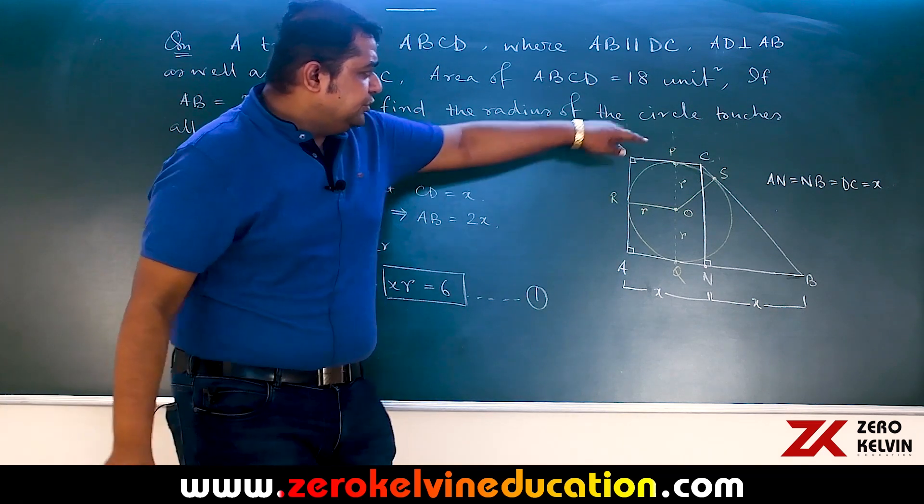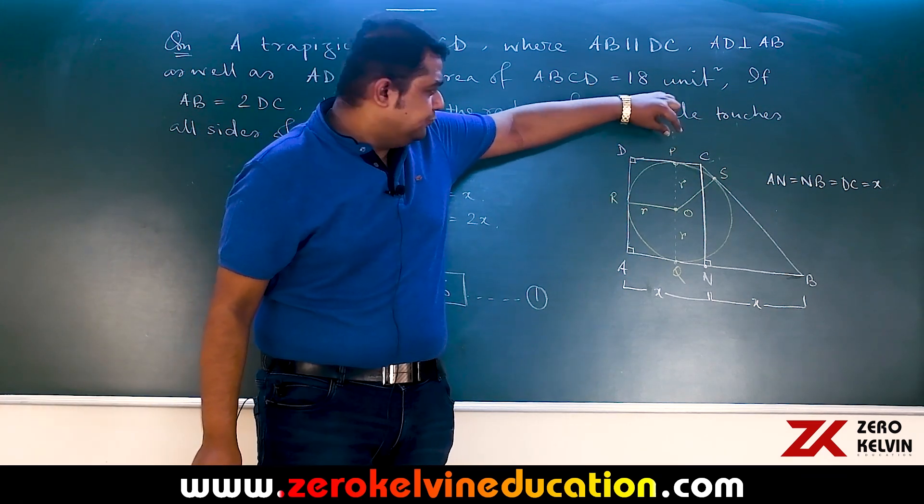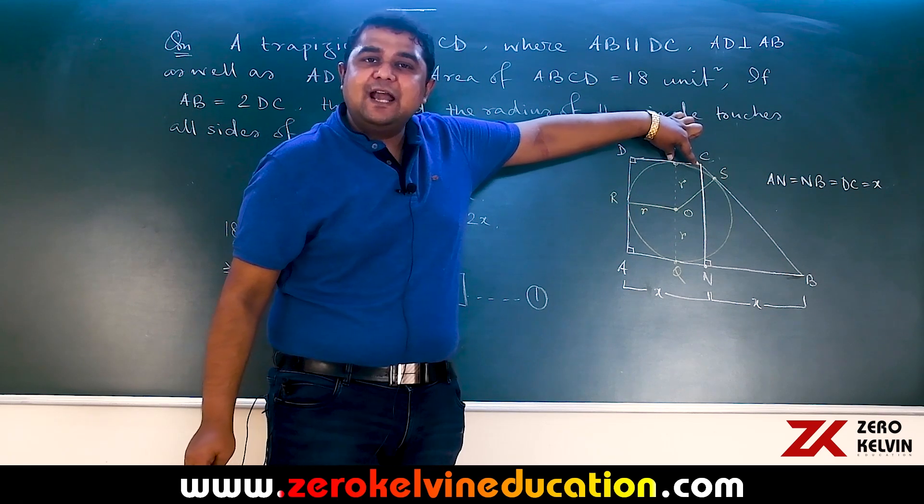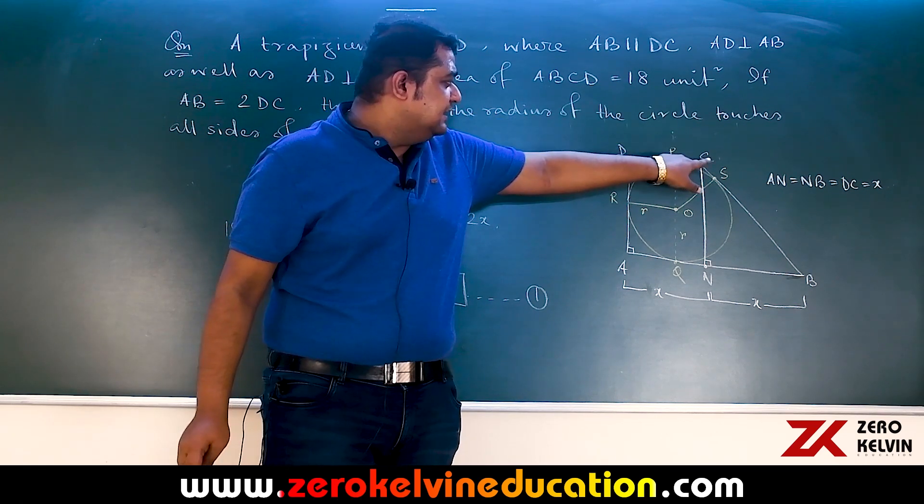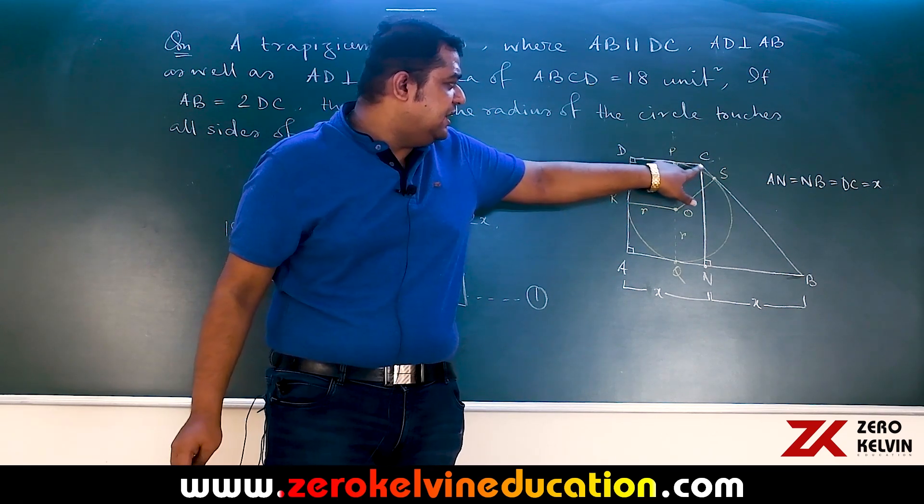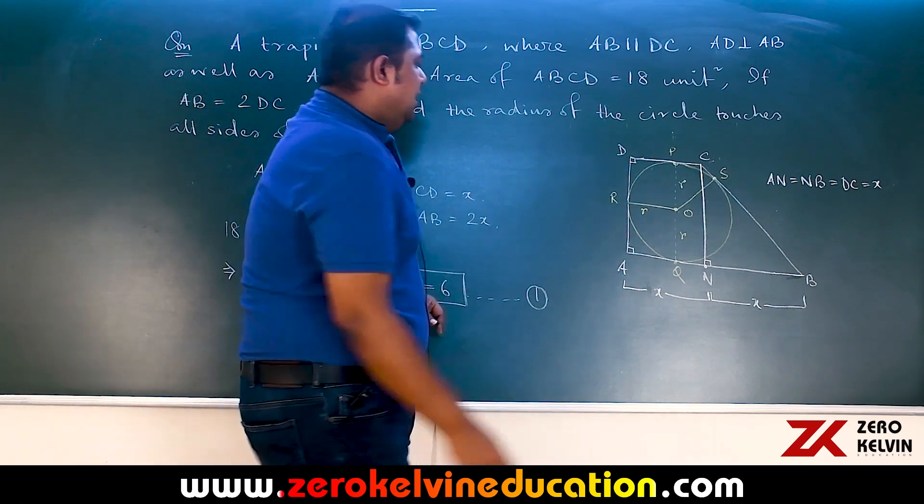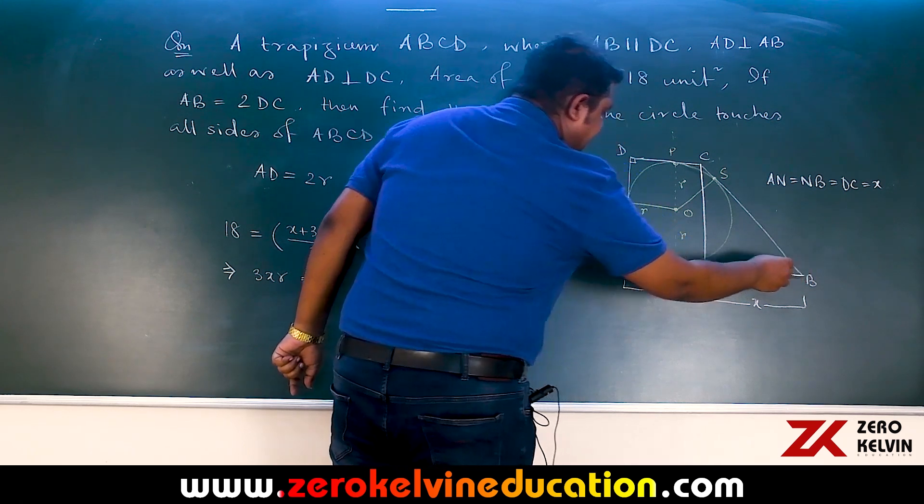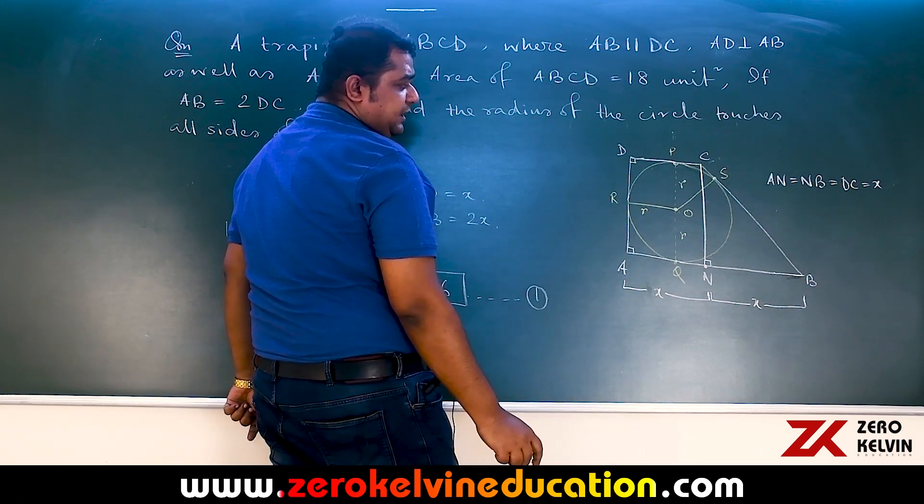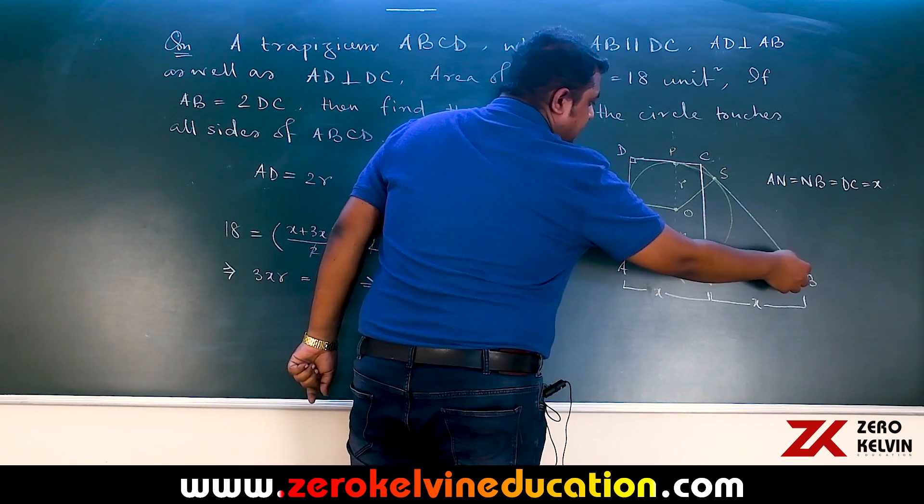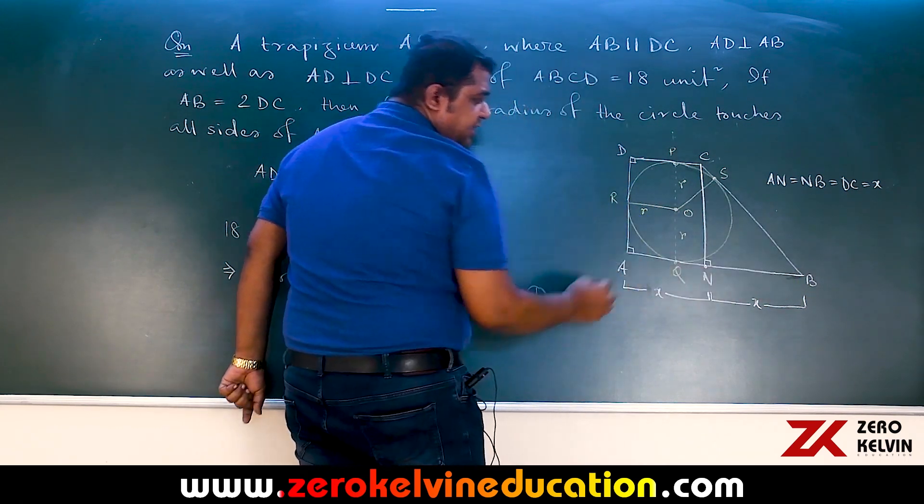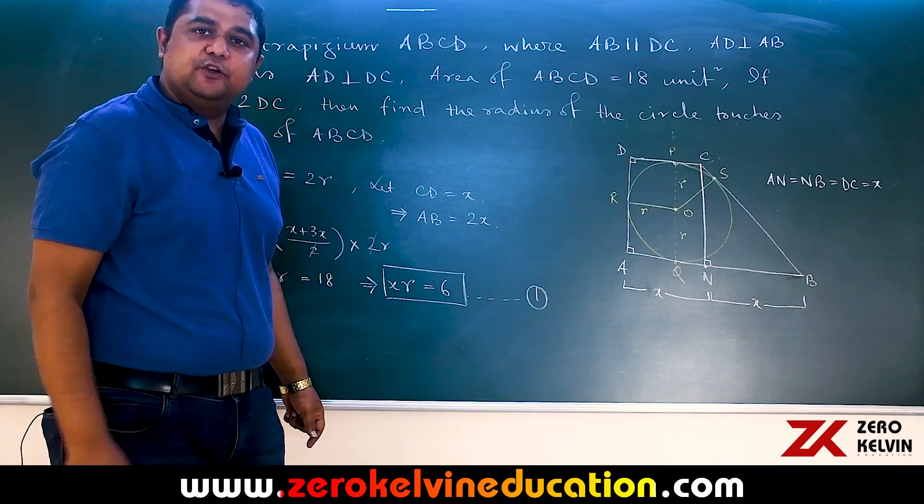Now C is an external point to the circle. So from C if we draw tangents to the circle, the length of the tangents CP and CS are equal. Again from B if we draw tangent to the circle then BS the tangent length and BQ the tangent length, they are also equal.